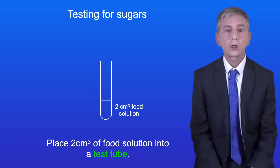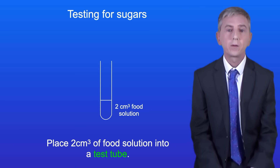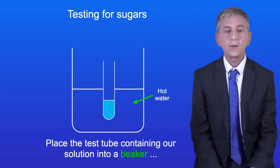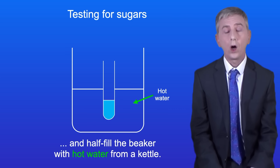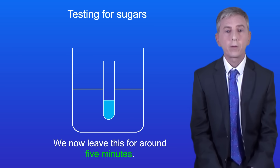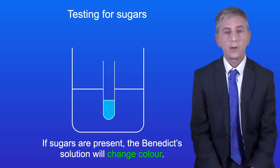Testing for sugar such as glucose is a bit more tricky. Again, we start with 2cm³ of our food solution. We then add 10 drops of Benedict solution, which is a blue colour. We place the test tube into a beaker and half fill the beaker with hot water from a kettle. We leave this for around 5 minutes. If sugars are present, then the Benedict solution will change colour.